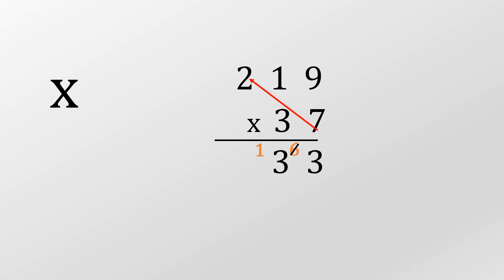Don't forget the important bit, the zero double bubble. Three times nine, that's twenty-seven. Seven down, carry the two. Three times one, well that's three, and we add the two giving us five. And three times two, that's six. Put in our add sign.